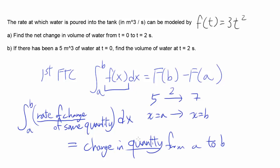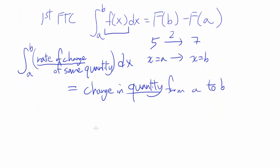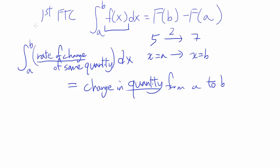When you differentiate quantity, by definition, you get rate of change of quantity. So antiderivative of rate of change of some quantity is going to be the quantity itself. So first fundamental theorem tells you the definite integral of rate of change of some quantity is equal to net change, net change in quantity from a to b.